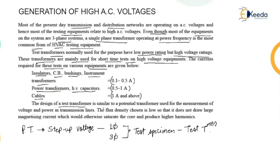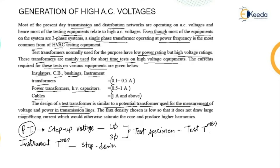The design of this test transformer is similar to a potential transformer used for measurement of voltage and power in transmission lines. In an instrument transformer the voltage is stepped down, but in case of a testing specimen the voltage is stepped up — that is the key difference. The flux density chosen is low so that it doesn't draw a larger magnetizing current, otherwise it may saturate the core with high harmonics.